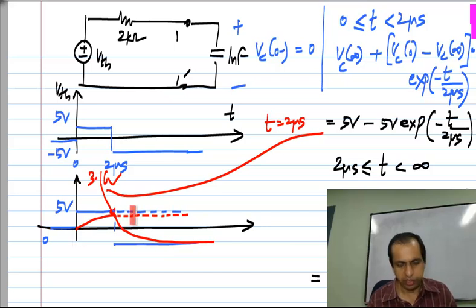The first step will take it to some positive value. It does not reach all the way to 5 volts because we have only given 2 microseconds for it and 2 microseconds is the time constant of the circuit. It takes many many time constants for it to reach very close to 5 volts. It reaches this voltage and then from there it falls back to minus 5 volts because of the application of the second step.